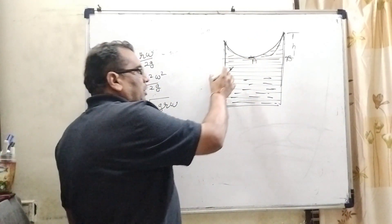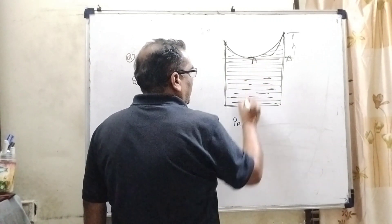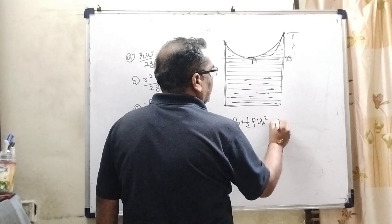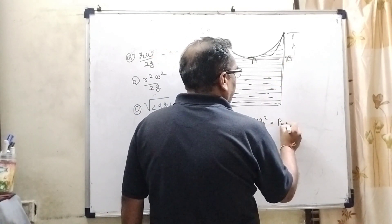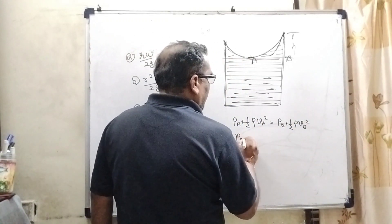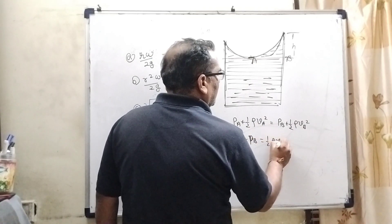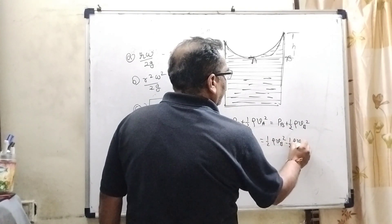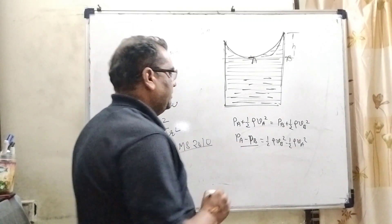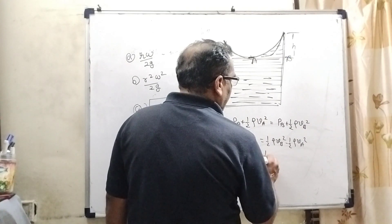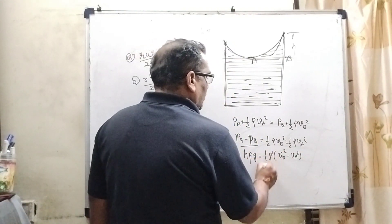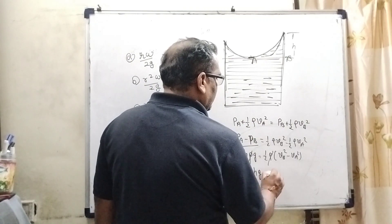By using Bernoulli's theorem: pressure at A plus kinetic energy at A (½·ρ·V_A²) equals pressure at B plus kinetic energy at B. So P_A minus P_B equals ½·ρ·V_B² minus ½·ρ·V_A². By using Pascal's rule, change in pressure equals H·ρ·g. So H·ρ·g equals ½·ρ·(V_B² minus V_A²). Here rho cancels out, giving H·g equals ½·(V_B² minus V_A²).